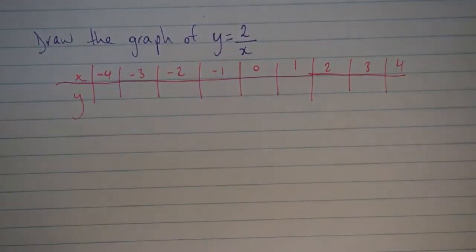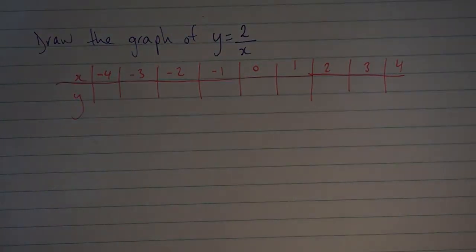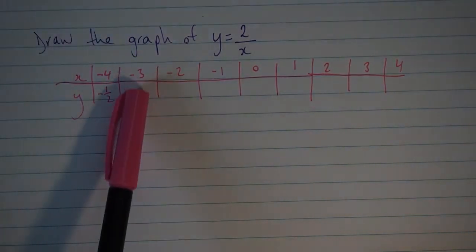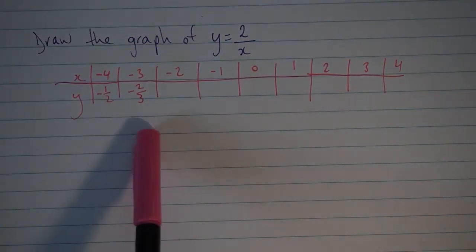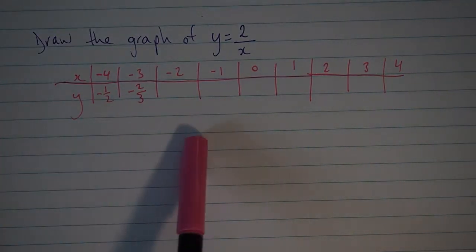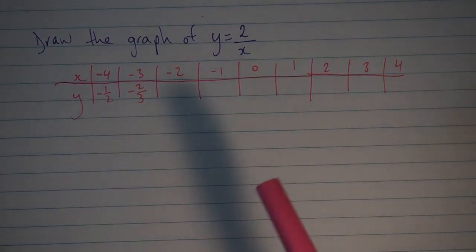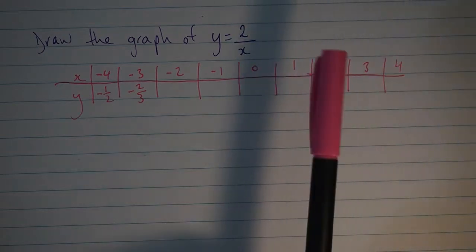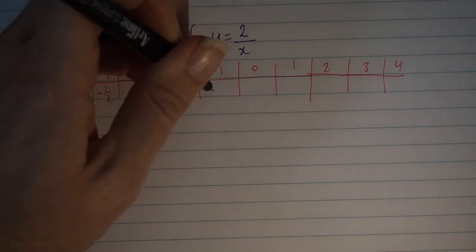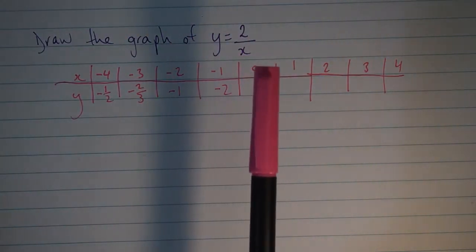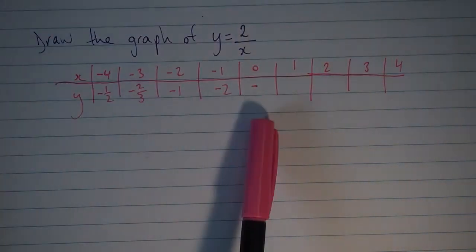When x is negative 4, 2 over negative 4 becomes negative 1/2. When x is negative 3, we get negative 2/3. Fractions are absolutely fine to use here. 2 over negative 2 becomes negative 1. 2 over negative 1 becomes negative 2. 2 over 0 - we cannot divide by 0, so that doesn't exist. I'm just going to put a little dash there.